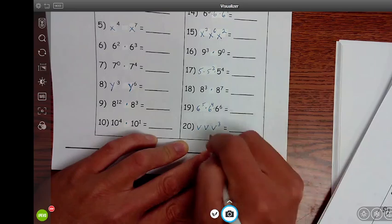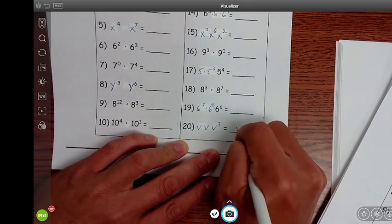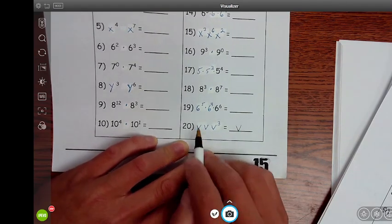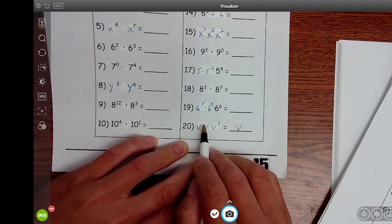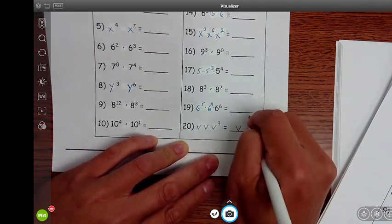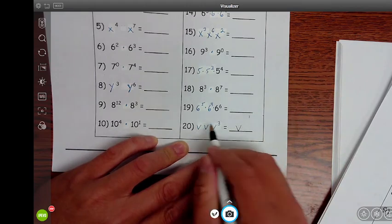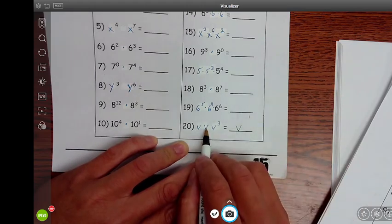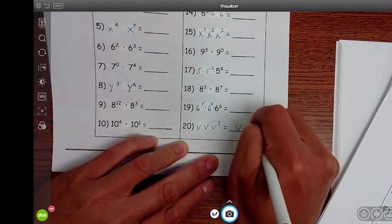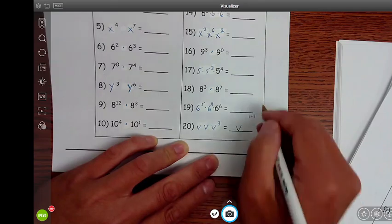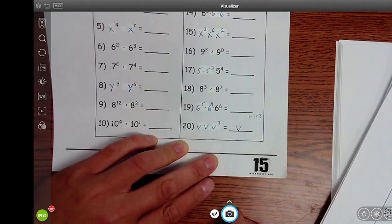First, the base is V, so I'm going to keep the base in my answer. There's a 1 in this exponent. There's a 1 exponent for this variable. It's not written, so I'm going to write 1. There's another 1 for the middle term. And then there's a 3 for the last term.